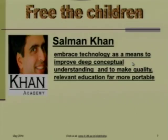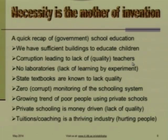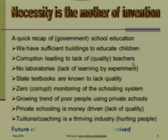Khan Academy's Salman Khan has a book called 'One World Schoolhouse,' which talks about these concepts and what he thinks the future school is. He gives students more independent control, allowing them to claim true ownership of their education. This is the most important thing we have to achieve. It will take 50 years, but it does not matter — we have to start. I hate private schooling — they take too much money. Tuitions, coaching — the whole education system is down the drain, ridiculously bad, and the future of our children is being compromised.